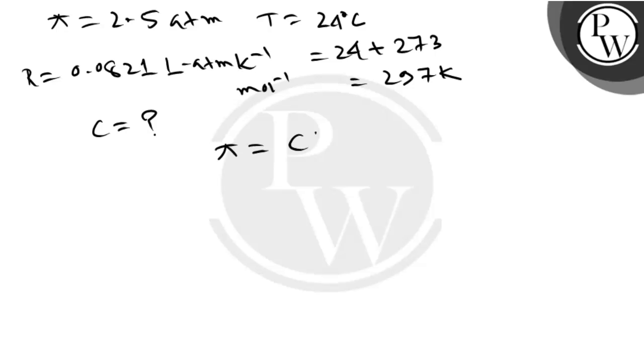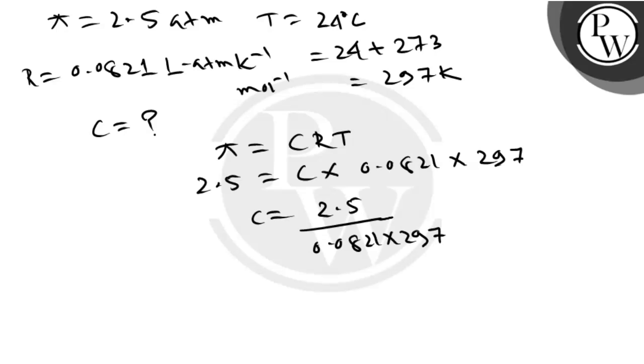Putting the value in the equation π = CRT: 2.5 = C × 0.0821 × 297. So C = 2.5 / (0.0821 × 297) = 0.1025 mol/L.